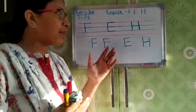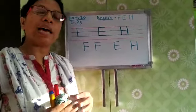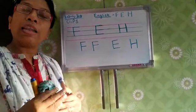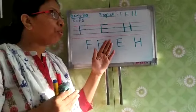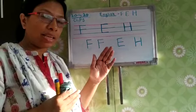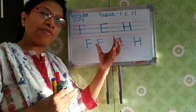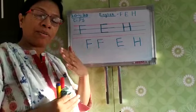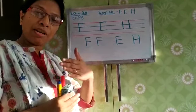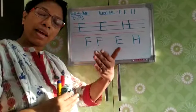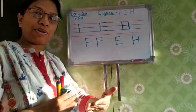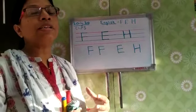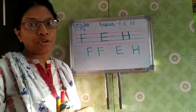I think this is the end of this class. I will come in the next video with more pattern writing. Now we are done with standing line and sleeping line, and with the help of this we have formed the letters — capital letters. Next class will be on slanting lines. Thank you, parents.